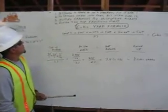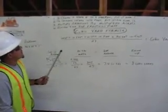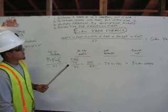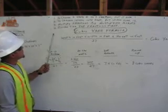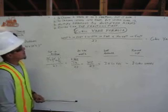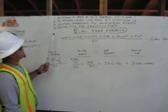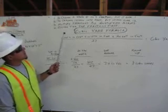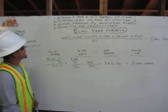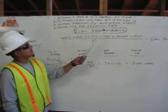So we've got four basic rules. The first one is to change a whole number to a fraction, put it over one. Number two, to change inches into feet, you've got to put it over twelve. Number three, multiply fractions by multiplying across. Number four, you divide the top fraction first.